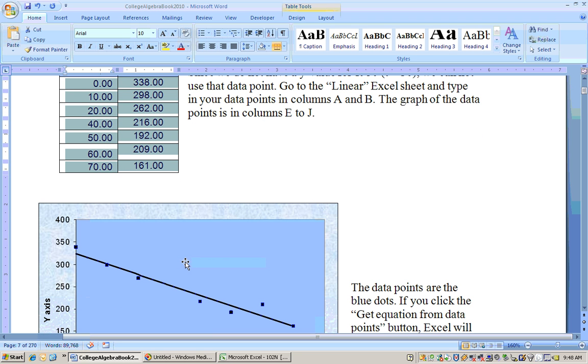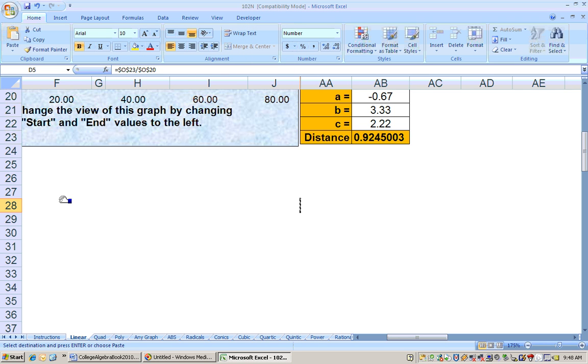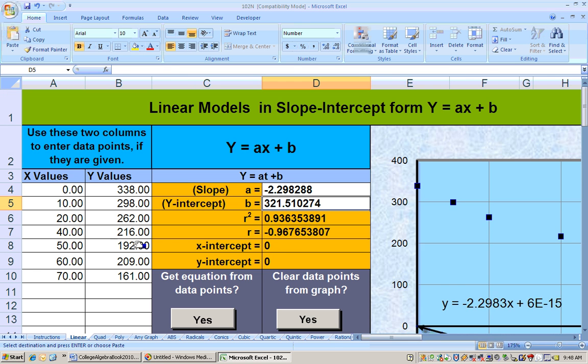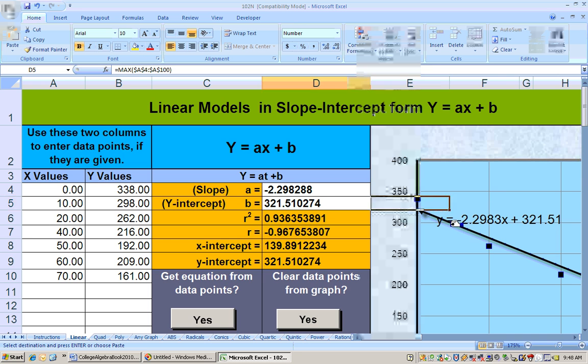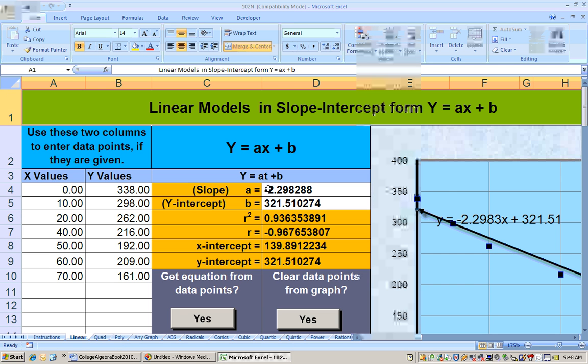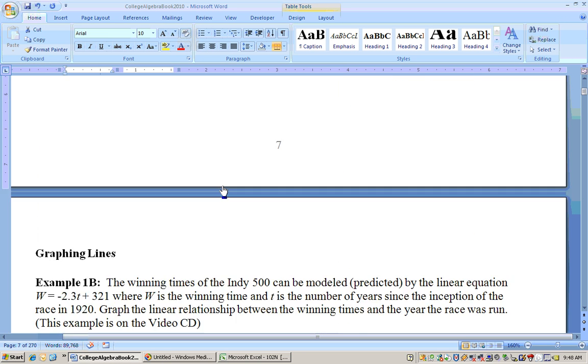If you want to get the line that best fits those data points, which we will in the next section, if you want to do that now, all you have to do is click Get Equation from Data Points. And what it will do is it will get the equation that best fits those data points and draw that equation right there. So that equation of the line that best fits those data points is y equals negative 2.298x plus 321.51. The y is playing the role of the winning times of the Indianapolis 500, and the x is playing the role of time.